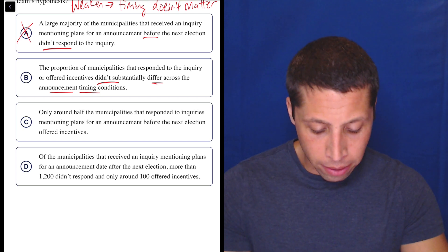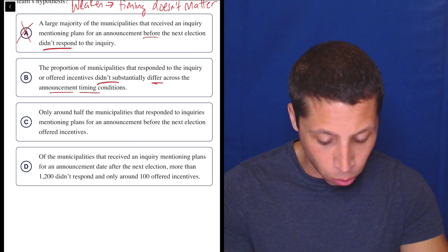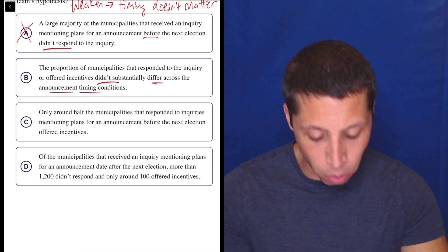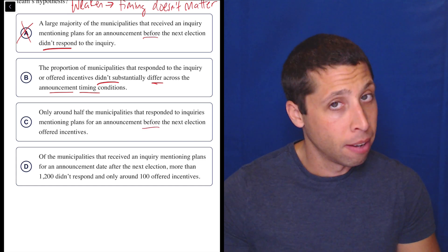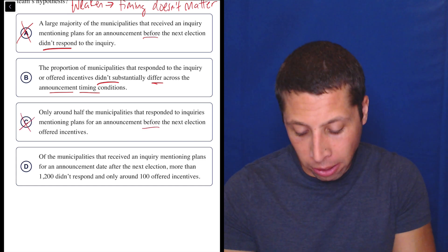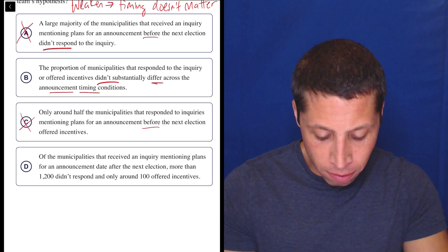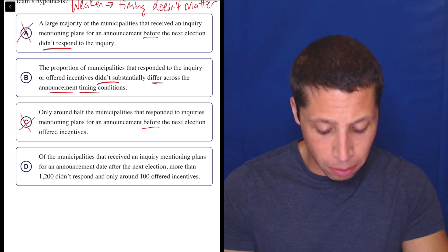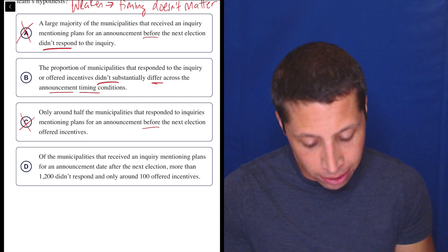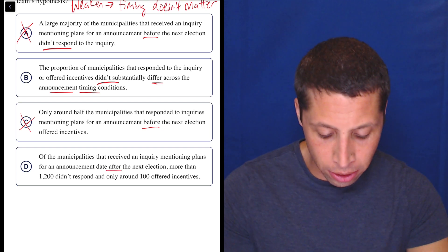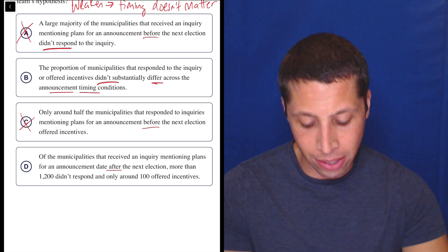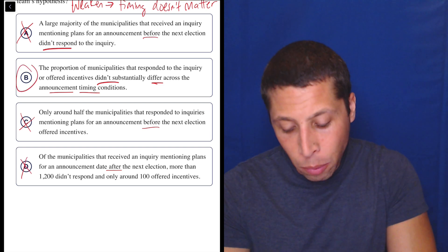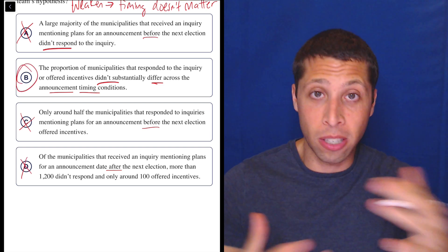Let's look at C though. Only around half the municipalities that responded to inquiries mentioning plans for an announcement before the election offered incentives. Again, not comparing both, just comparing the before. D, of the municipalities that received an inquiry mentioning plans for an announcement date after the election, more than 1,200 didn't respond and only around 100 offered incentives. Again, only about one. So the only one that's really about the timing conditions comparatively is B.